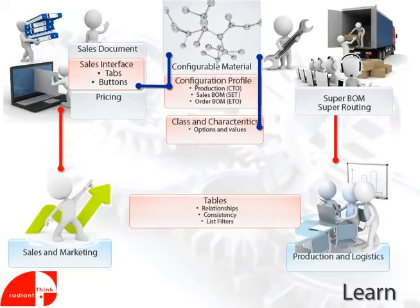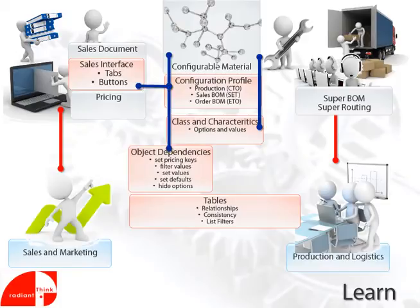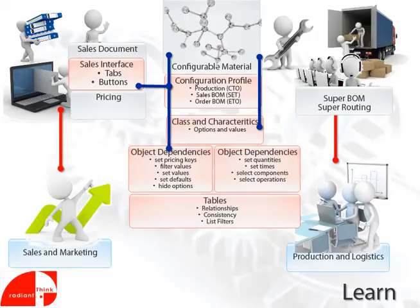To make all this work, we define the rules and pieces of code. In most cases, the sales rules are defined and allocated to the configuration profile. The code for selecting components and operations, and setting quantities and time, are allocated in the BOM and the routing.